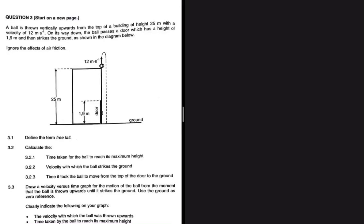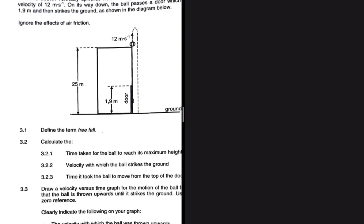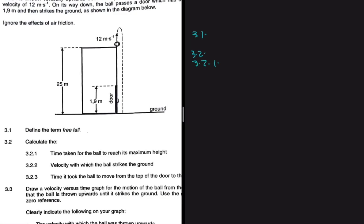A ball is thrown vertically upwards from the top of a building of height 25 meters with a velocity of 12 meters per second. On its way down, the ball passes a doll which is at a height of 1.9 meters and then strikes the ground as shown in the diagram. We can ignore the effects of friction. Question 3.1 asks us to define the term freefall — I'll leave that for you. Question 3.2.1 asks us to calculate the time taken for the ball to reach its maximum height.